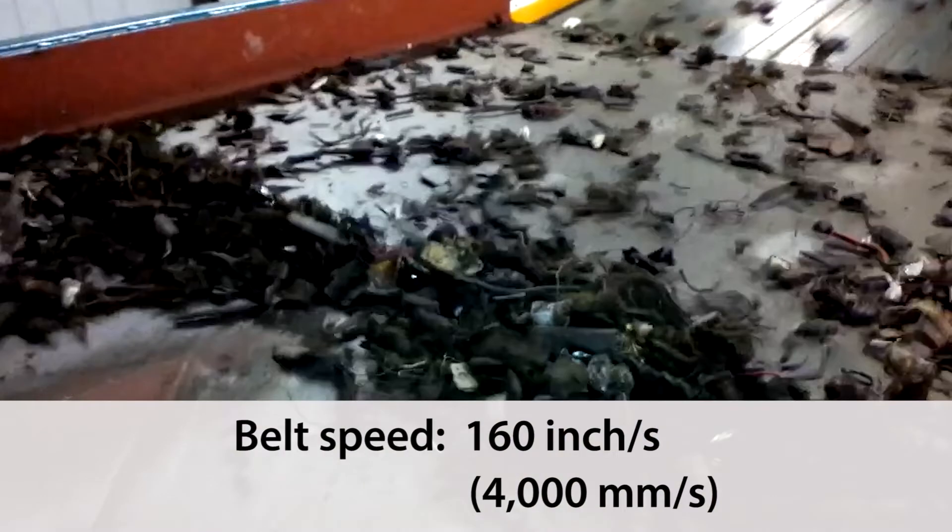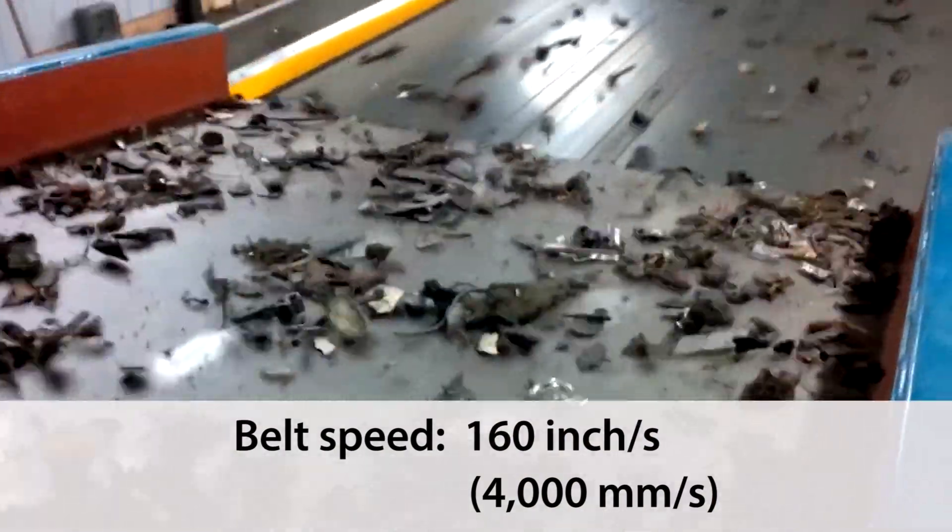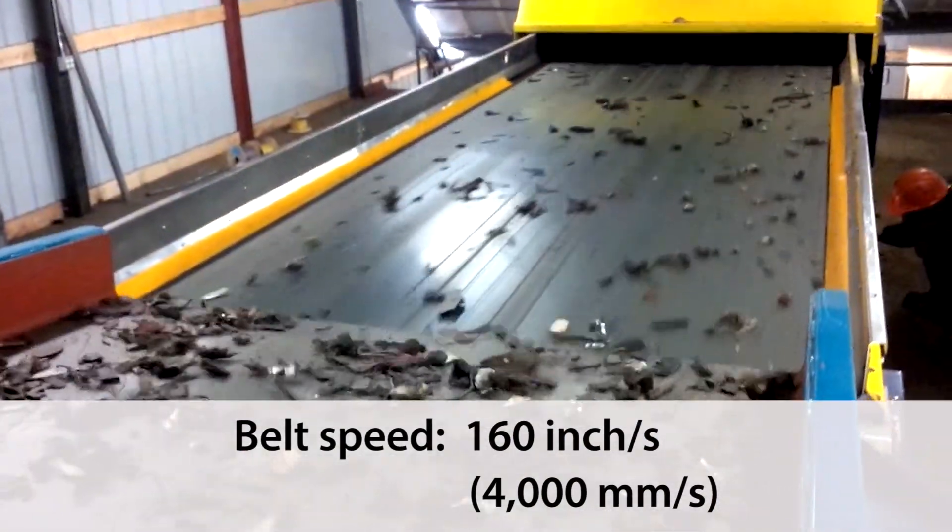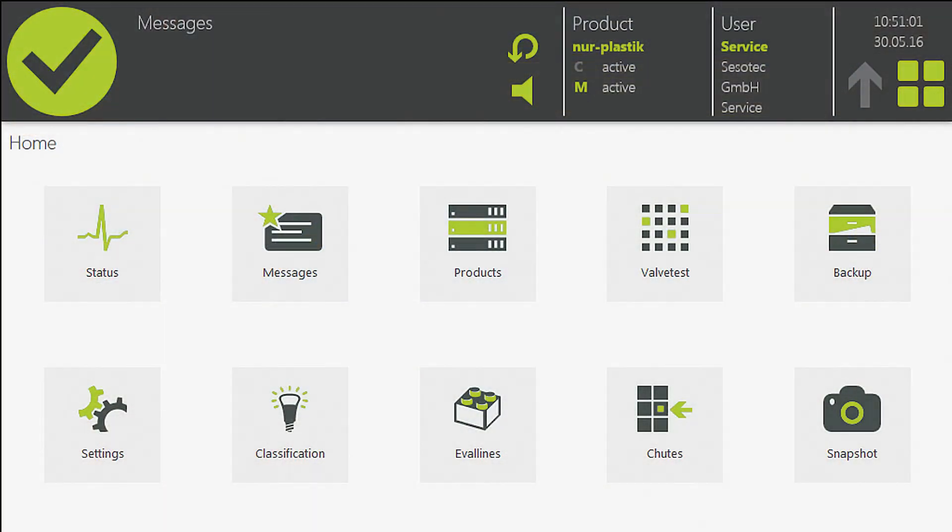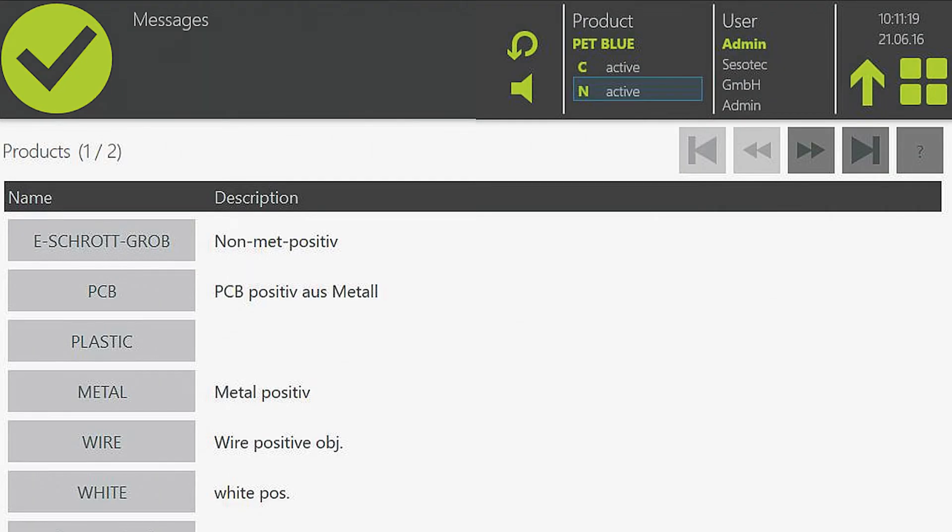which run with a belt speed of up to 160 inches per second. Our smart operating software with intuitive navigation allows you to operate and configure your new system and sorting programs quickly and effortlessly.